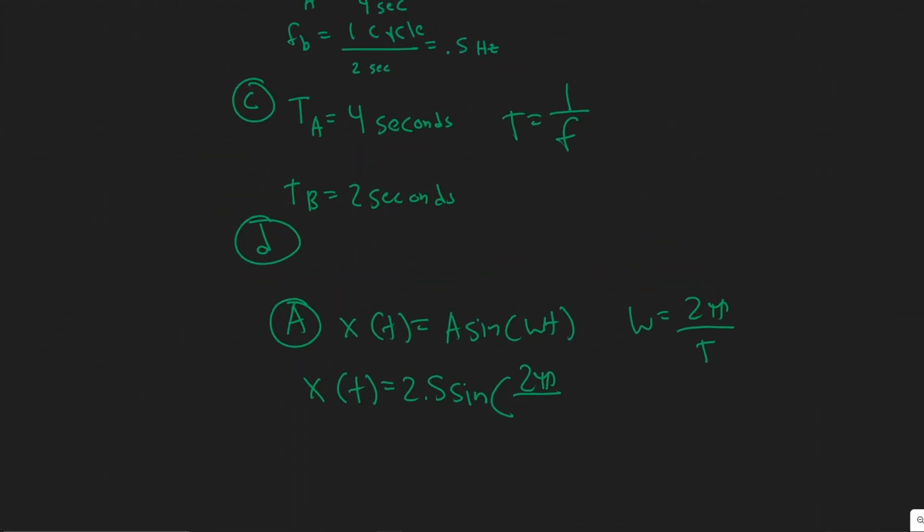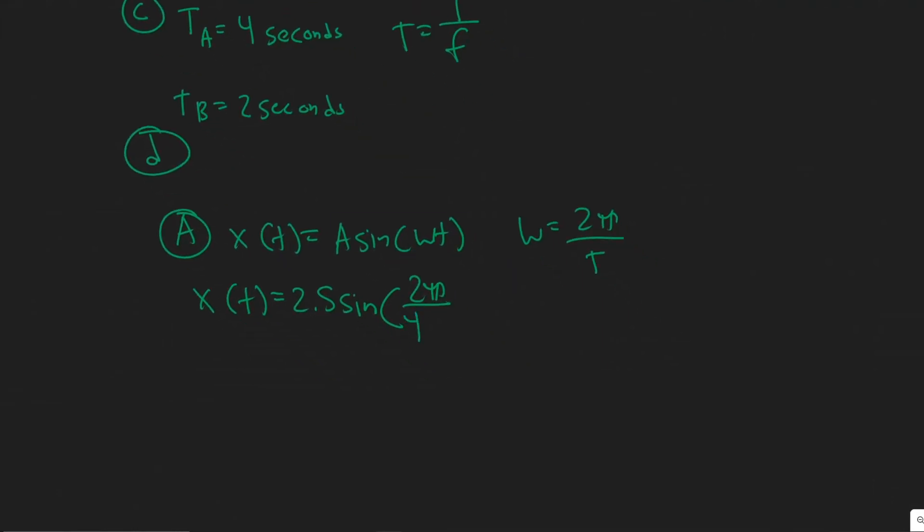So sorry about that. Four seconds. And then we multiply by t. So 2.5 sine of, and this is just π over two, right? Because this is one half t. So this is your A.